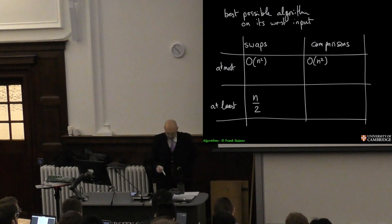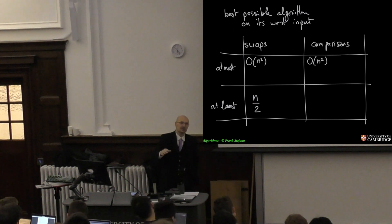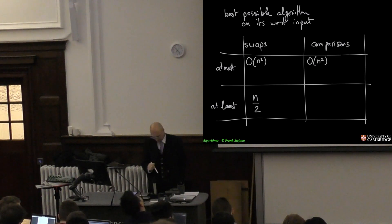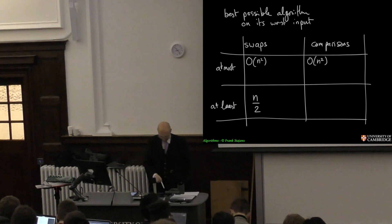So notice I'm putting a bound here. I'm not saying that I know how to do it like this. I'm saying whatever the algorithm is, you can be Gauss, you can be Newton, you can be God, you are not going to be able to do it in any less than that. I don't know if you can do it, but whatever you do it's not going to be any better, any smaller number than this.